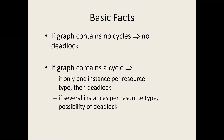Those are the basic facts to consider in resource allocation graphs and wait-for graphs. If the graph contains no cycles, there are no deadlocks. If the graph contains a cycle with only one instance per resource type, there is a deadlock. If there is a cycle with several instances per resource type, there is only a possibility of a deadlock — sometimes it is a deadlock, sometimes it may not be.